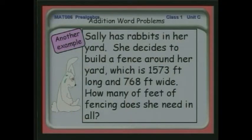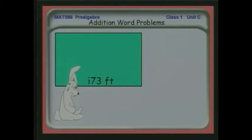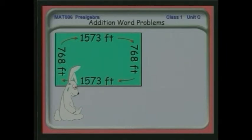Here's another problem. Sally has rabbits in her yard, and she decides to build a fence around her yard, which is 1,573 feet long and 768 feet wide. We want to know how many feet of fencing she needs in all. Let's extract the important part of the information. A good thing to do always is to try to make a diagram that illustrates the information. It always helps me to see it.